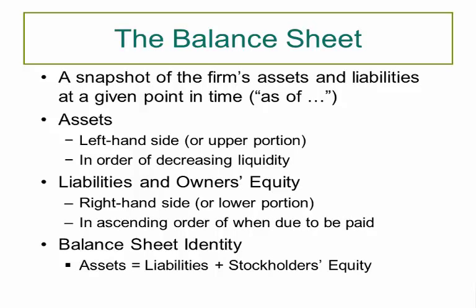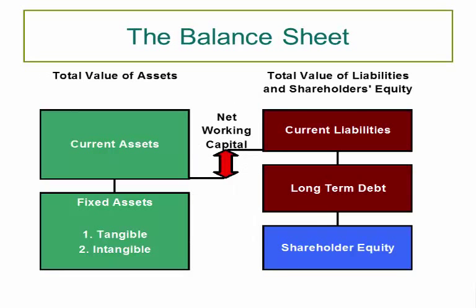All assets on the left-hand side must balance with all liabilities and owner's equity on the right side — that is why it's called the balance sheet. The balance sheet illustration does a good job of explaining net working capital. Net working capital equals current assets minus current liabilities. It's a short-term equation that lets you assess whether a company looks financially healthy in the near term. A positive number is generally a healthy sign.